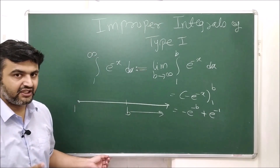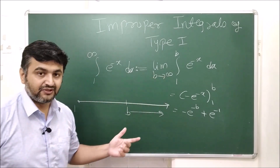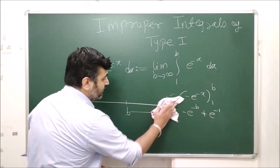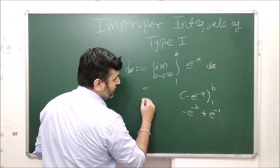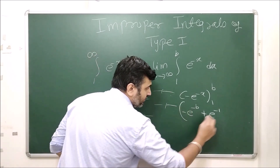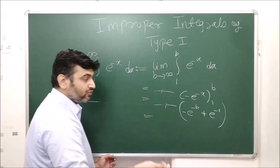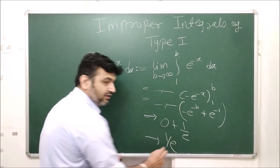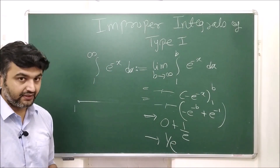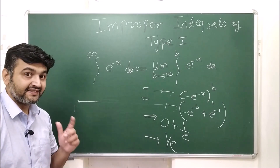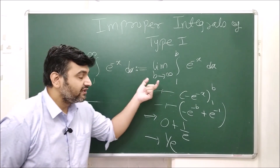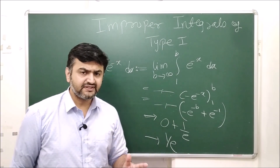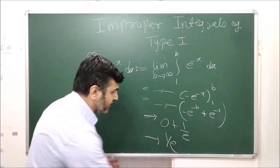Now, by definition, the improper integral is rewritten as the limit as B → ∞ of the integral from 1 to B. This is why the limit comes into the picture. Once you have B, you do the integration using Riemann theory, and then apply the limit. As B → ∞, e^(−B) → 0, so the answer is 1/e. This improper integral converges to 1/e.